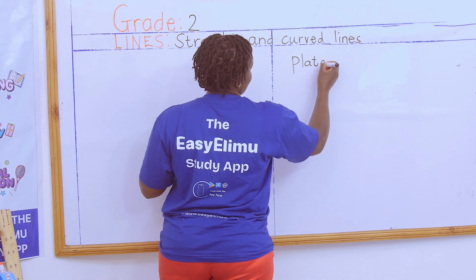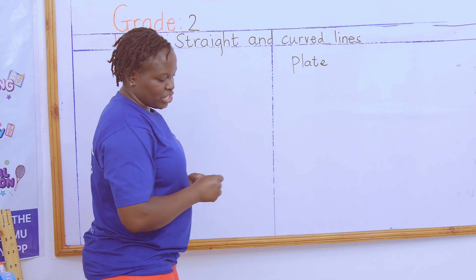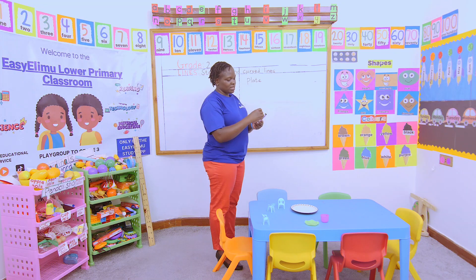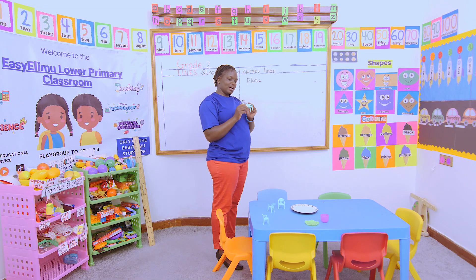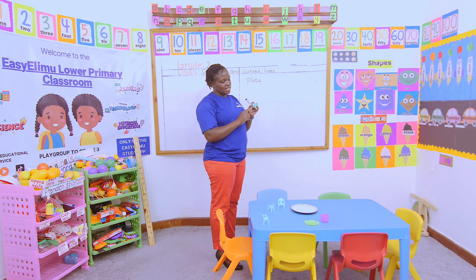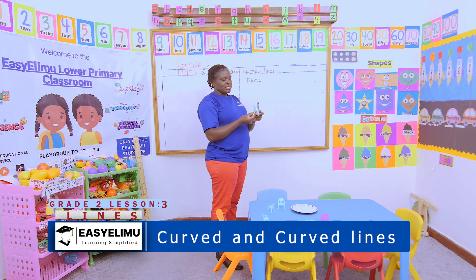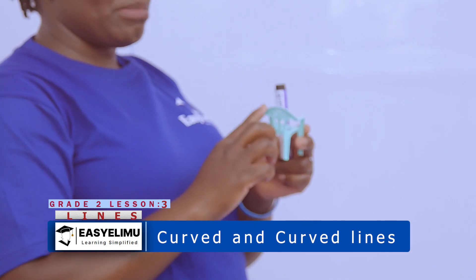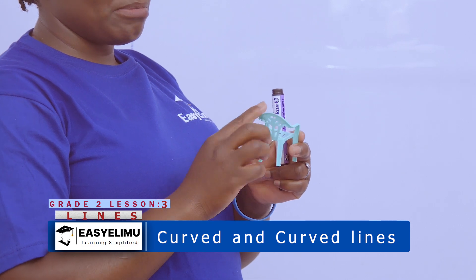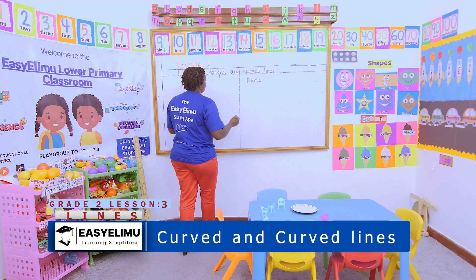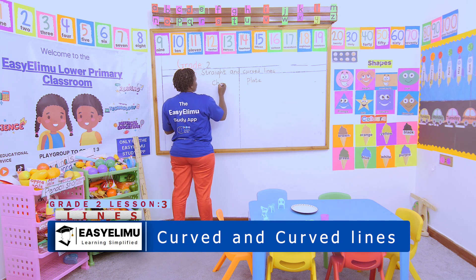Very good, very nice! Look at the chair. This chair has both lines. Look at the legs — the legs have straight lines. What about the backrest? The backrest is curved. So when you look at the chair, we can say the chair has both.